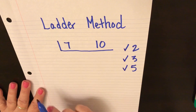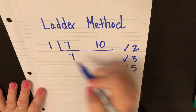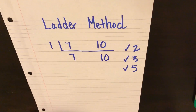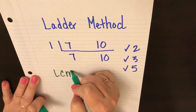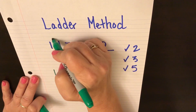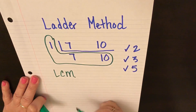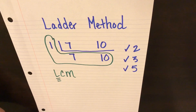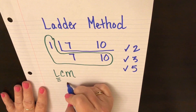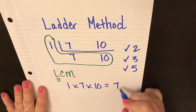The only number that both 7 and 10 can be divided by is 1. 1 times 7 is 7, and 1 times 10 is 10. Once we're done dividing, the last step is to multiply the numbers along the left side of the ladder and the numbers along the bottom side of the ladder — it creates the shape of an L. 1 times 7 is 7, times 10 equals 70.